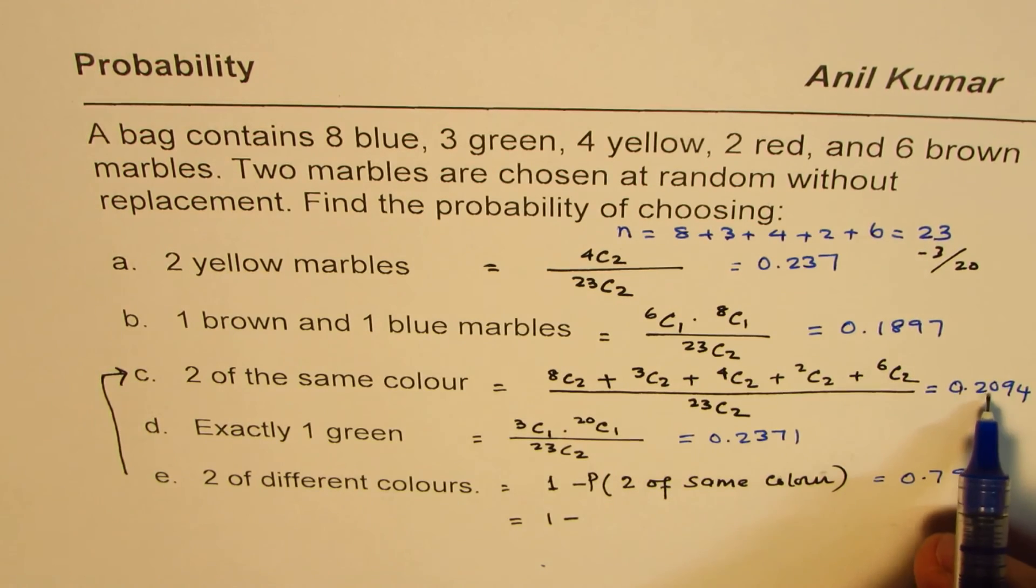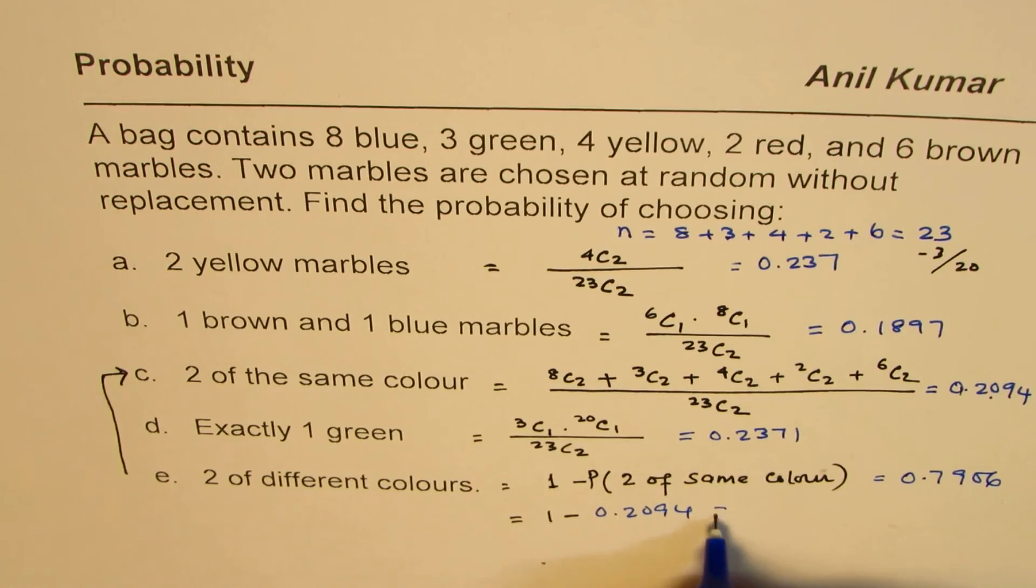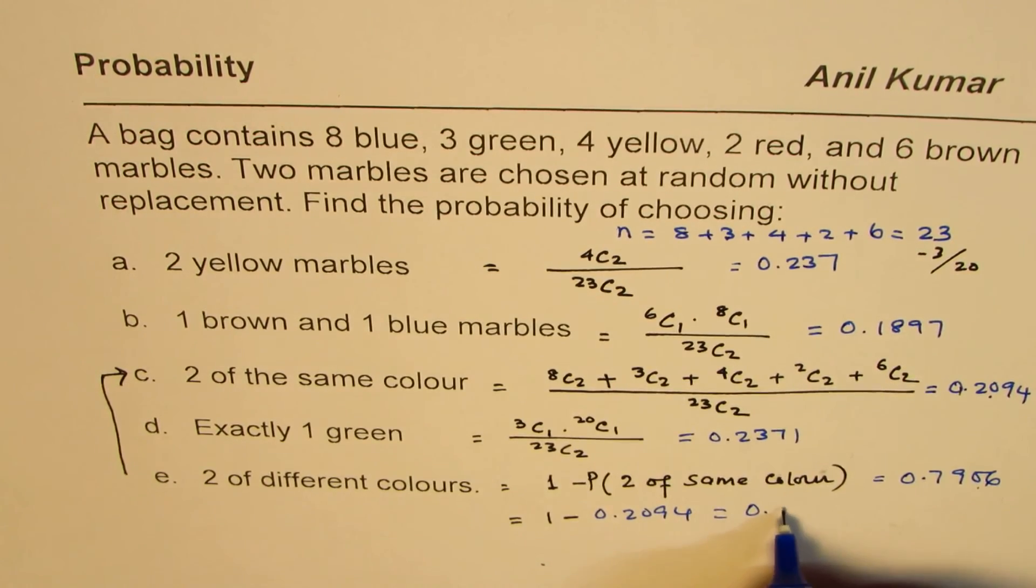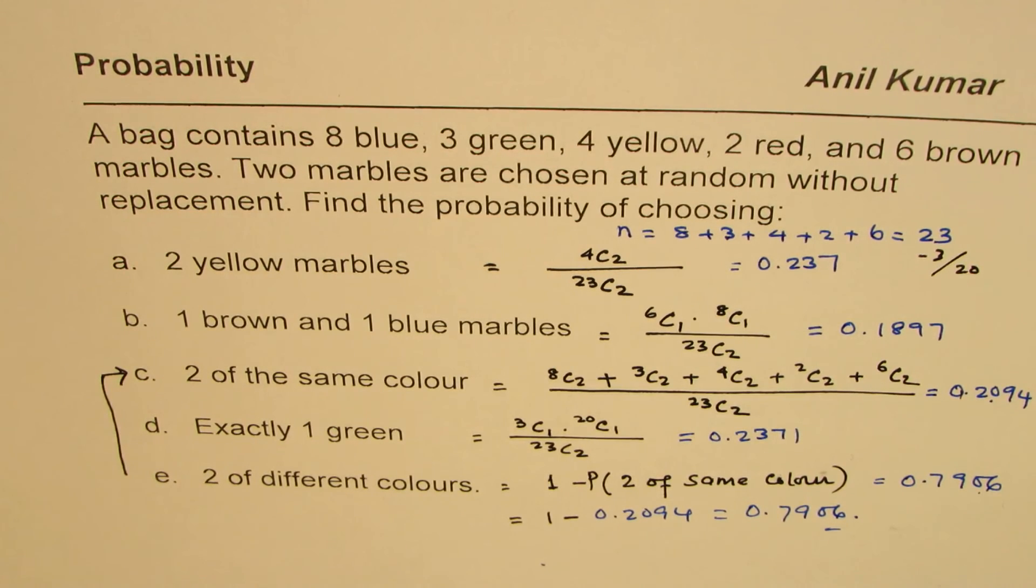And this, you will get as, when you subtract, 0.7906. So you subtract this value, which is 0.2094, to get that value, which is 0.7906. You can always do these calculations and check.